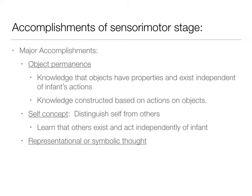The major accomplishment of the sensorimotor stage is object permanence — the knowledge that objects have properties and exist independent of the infant's actions. Just because we don't see the ball doesn't mean the ball ceases to exist. Piaget said it wasn't until the end of this period, around 18 months to two years, that we really see this emerge. Other accomplishments include self-concept and representational or symbolic thought, which underlies language development. Remember, comprehension precedes production — children understood words before they could say them.